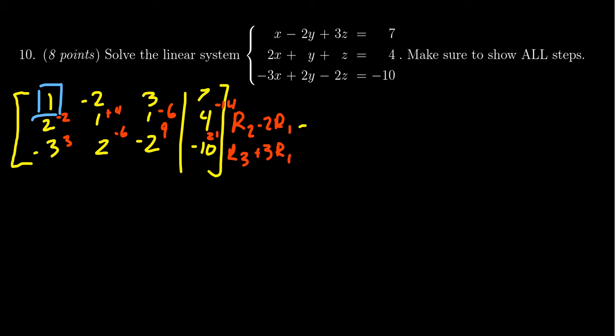So then copying down what we did to that matrix, the first row stays the same: 1, -2, 3, and 7. The second row will become 0, 5, -5, and -10. The third row will become 0, -4, positive 7, and then 11.